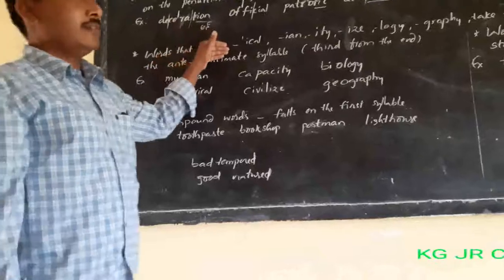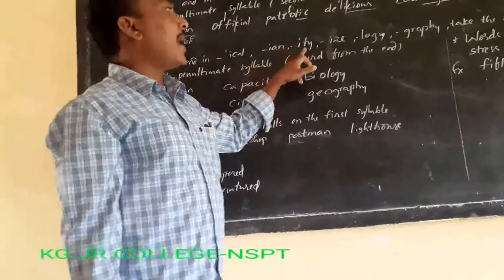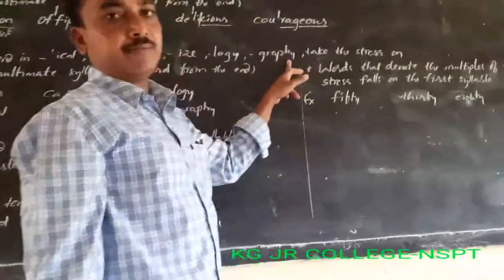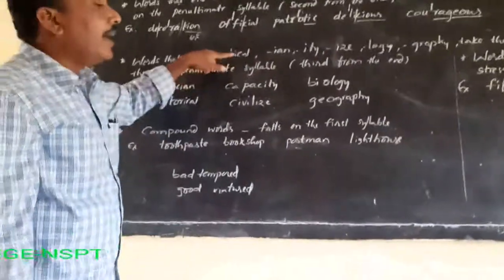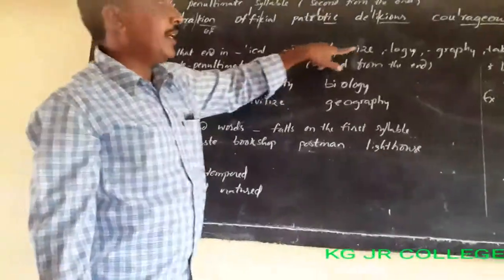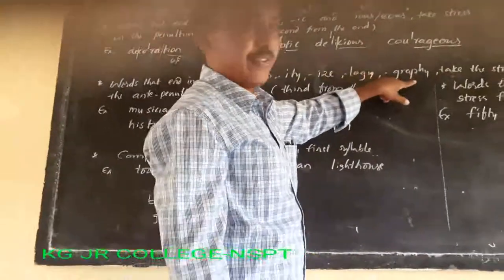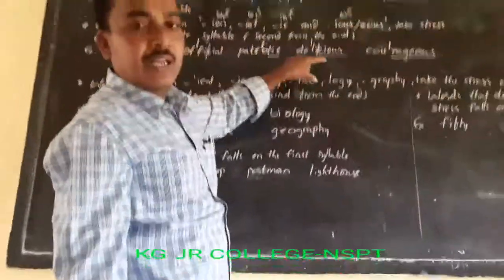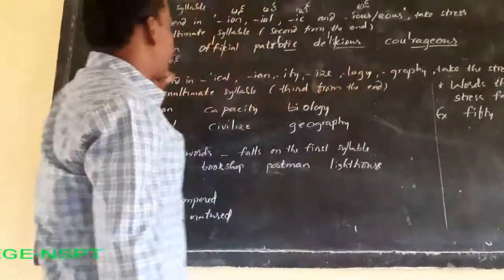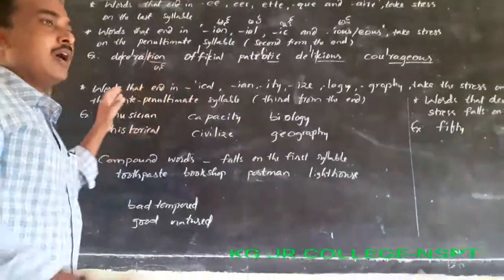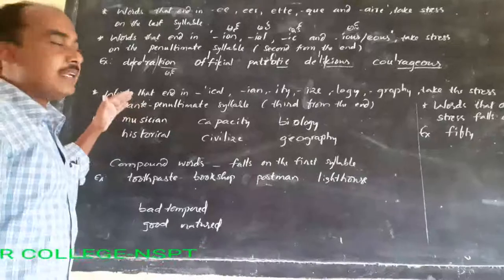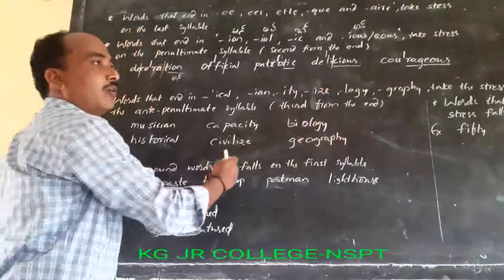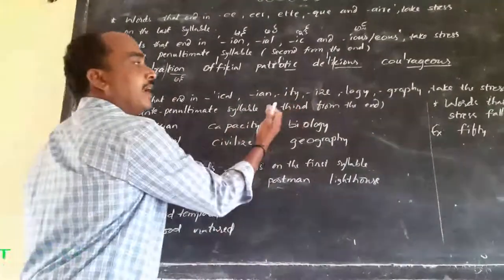The next two rules: words which end in -ICAL, -IAN, -ITY, -IZE, -LOGY, -GRAPHY — stress will be on the antepenultimate syllable. What is meant by the antepenultimate syllable? The last to third syllable is called the antepenultimate syllable.